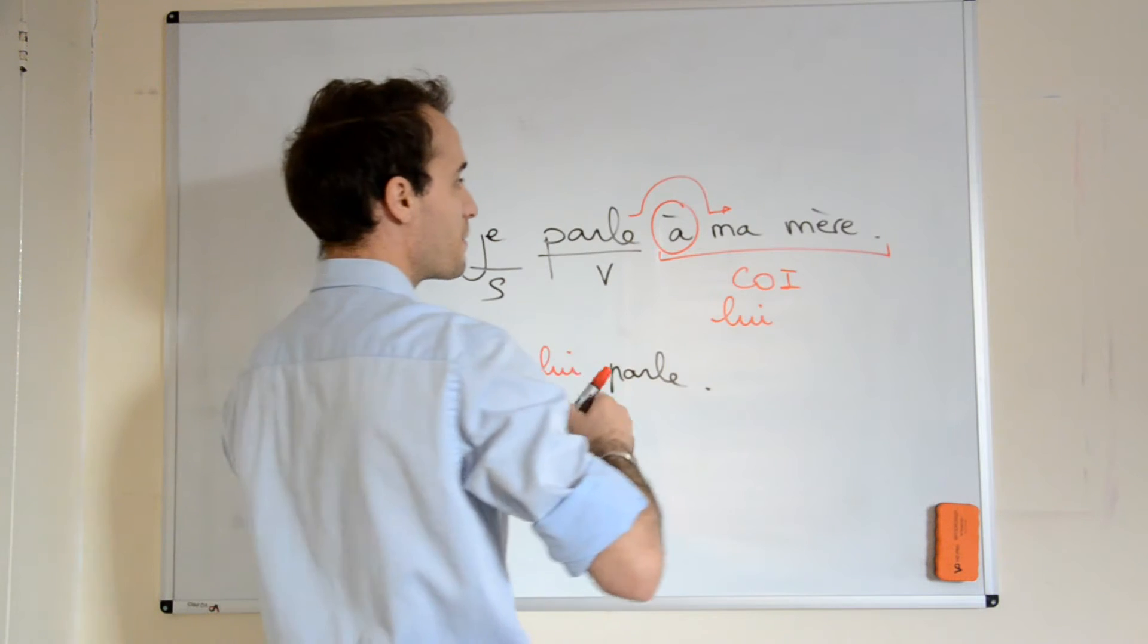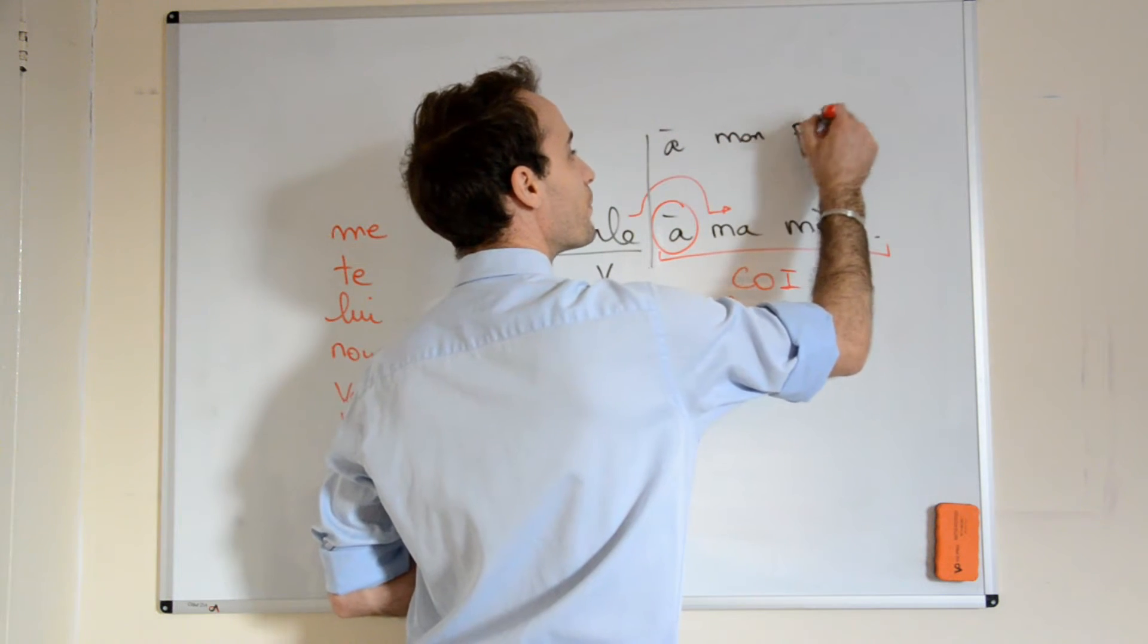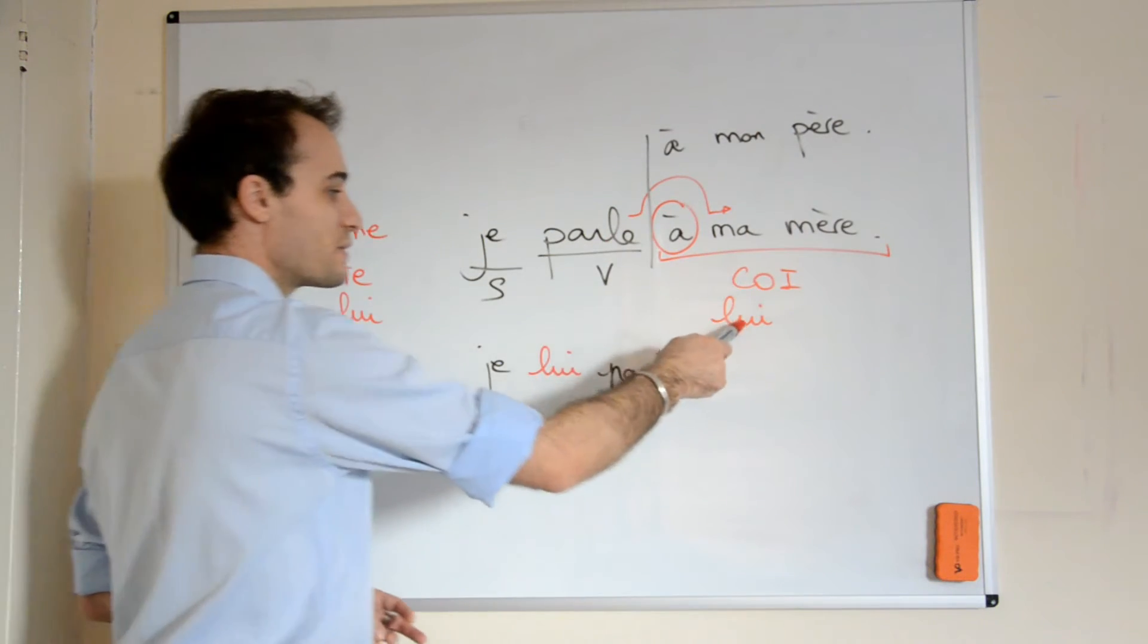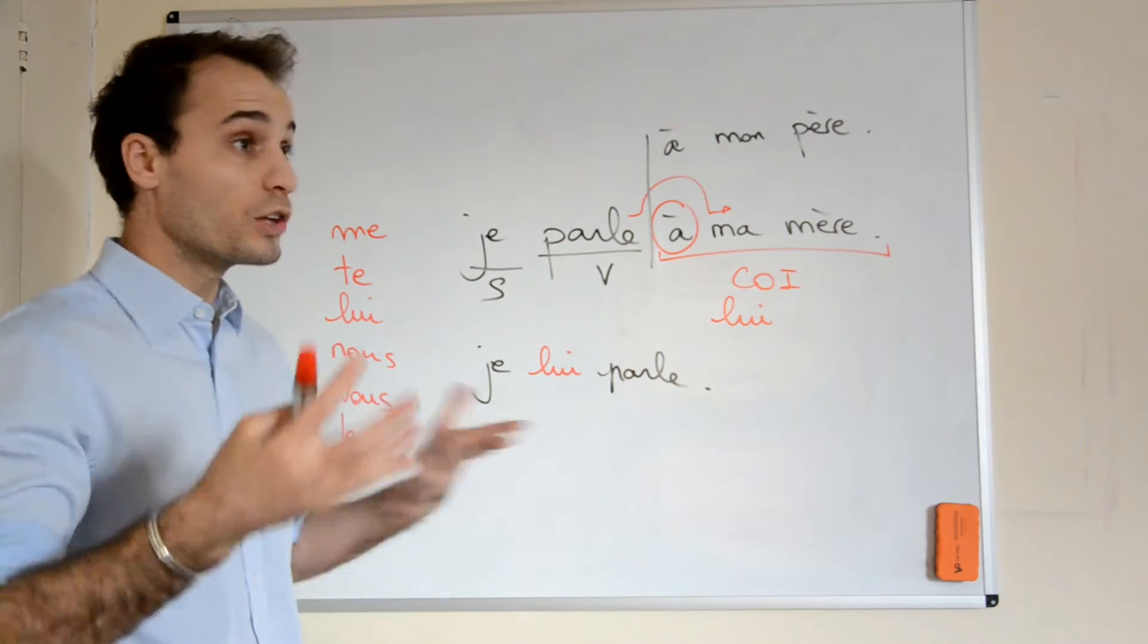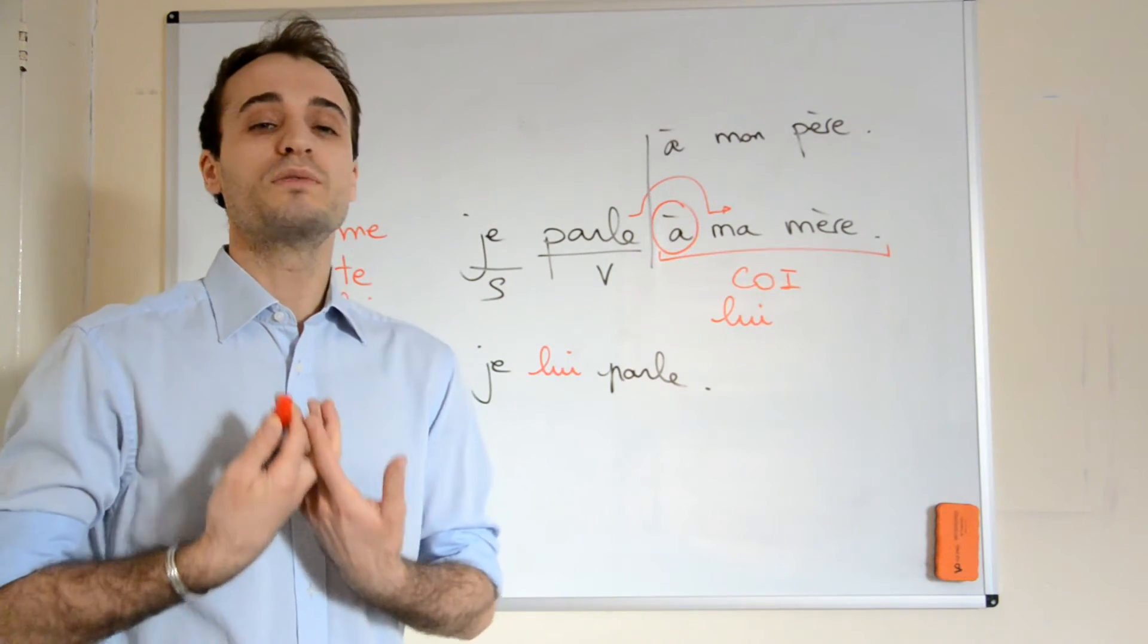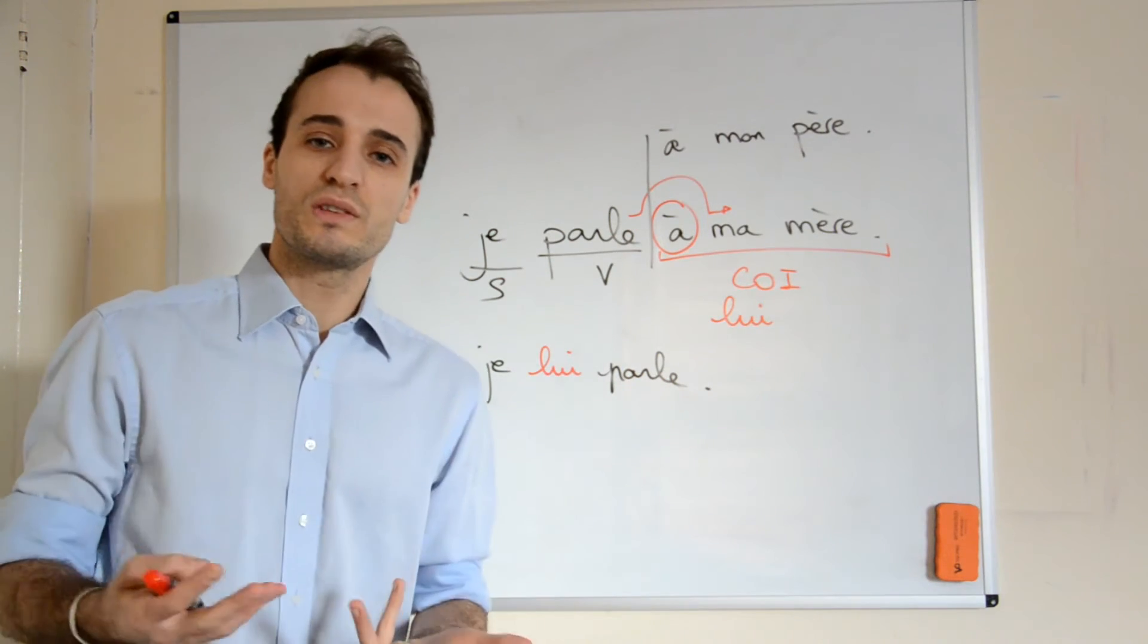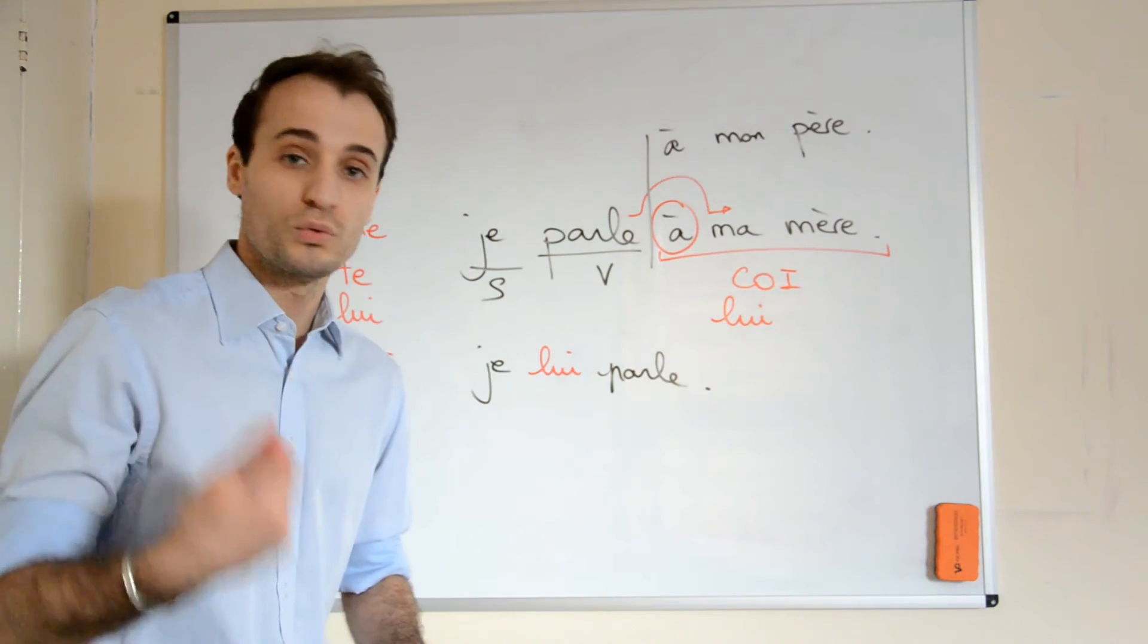If you had, instead of à ma mère, here, we had à mon père, to my father, then it would have been exactly the same, lui. Je lui parle, I speak to him. So of course, you would tell me how do I know if someone says je lui parle, how do I know if it's to him or to her. And I'm saying to you, you will have a context, because you can't say this sentence without a context. It's impossible. So because of the context, you will know if it's to him or to her. Don't worry.